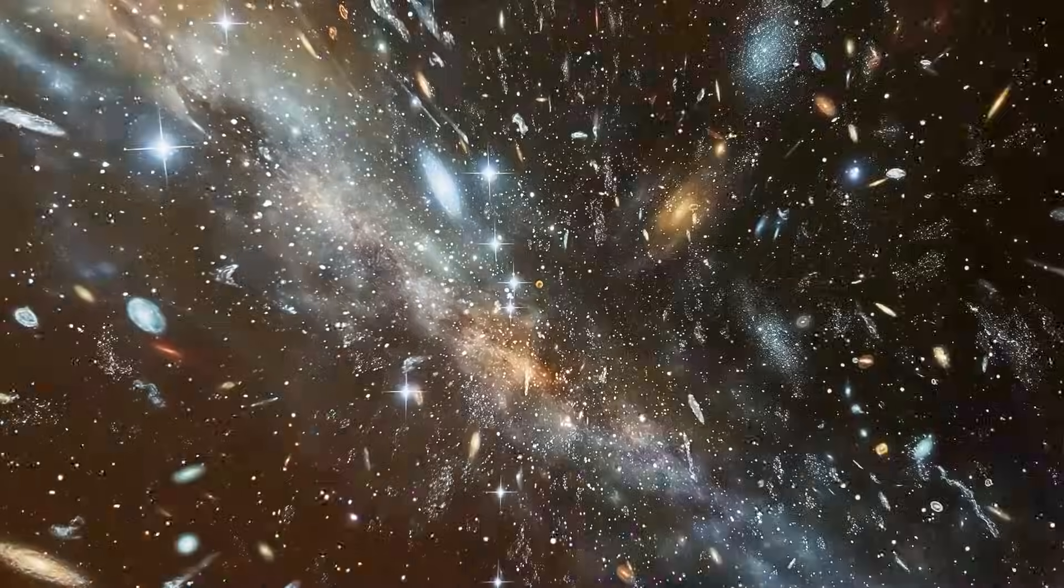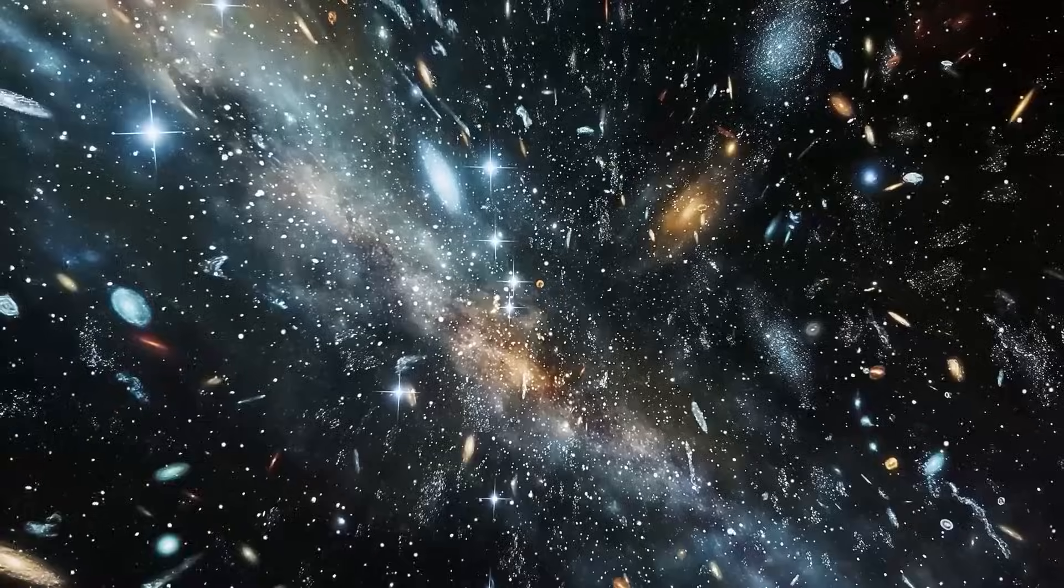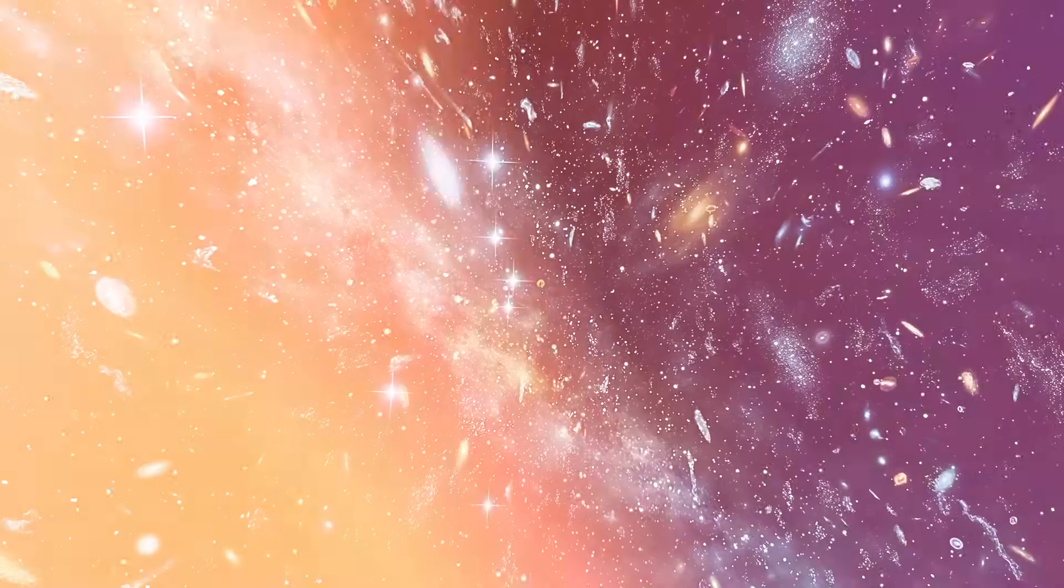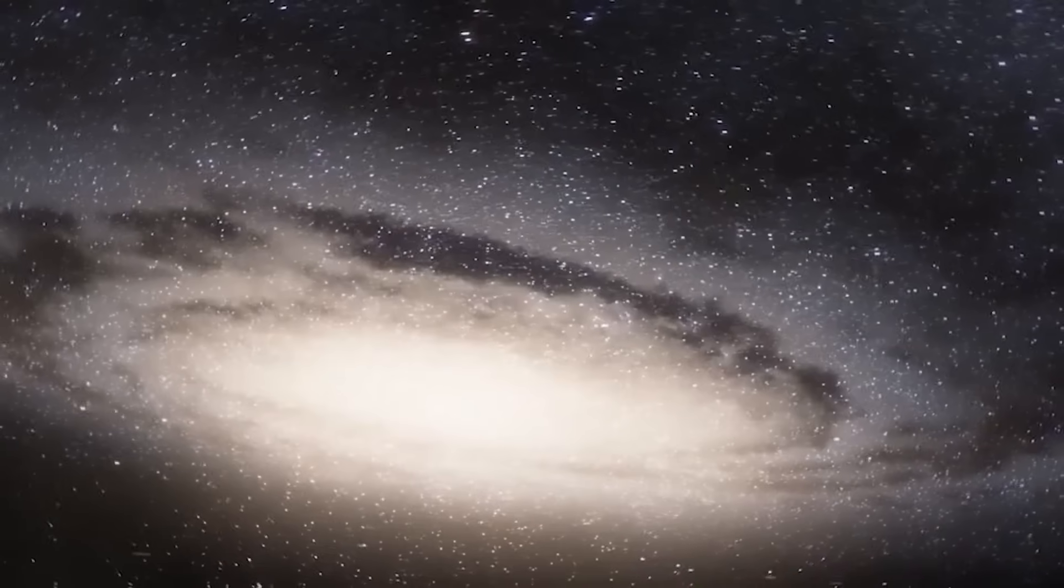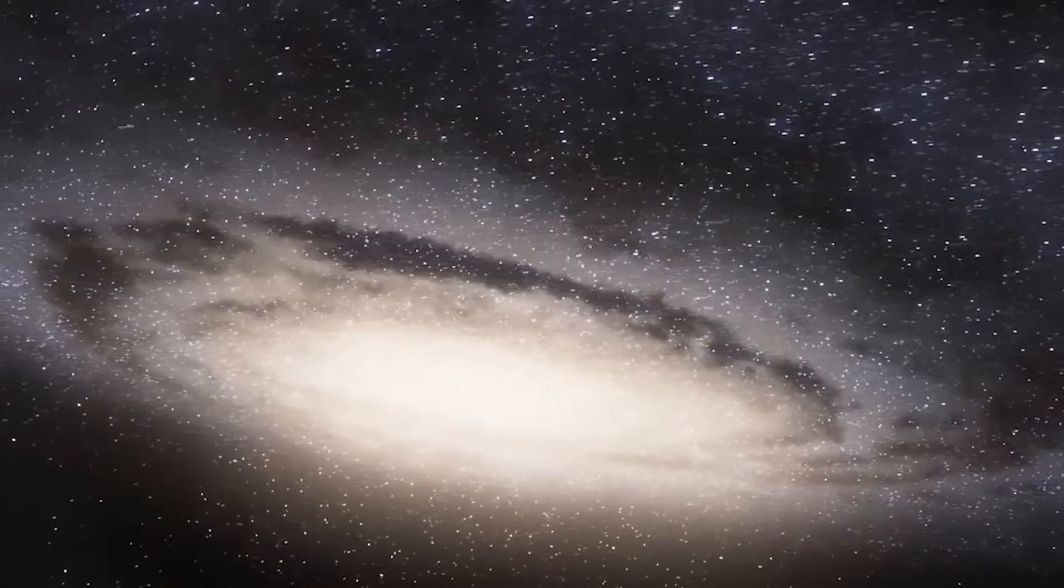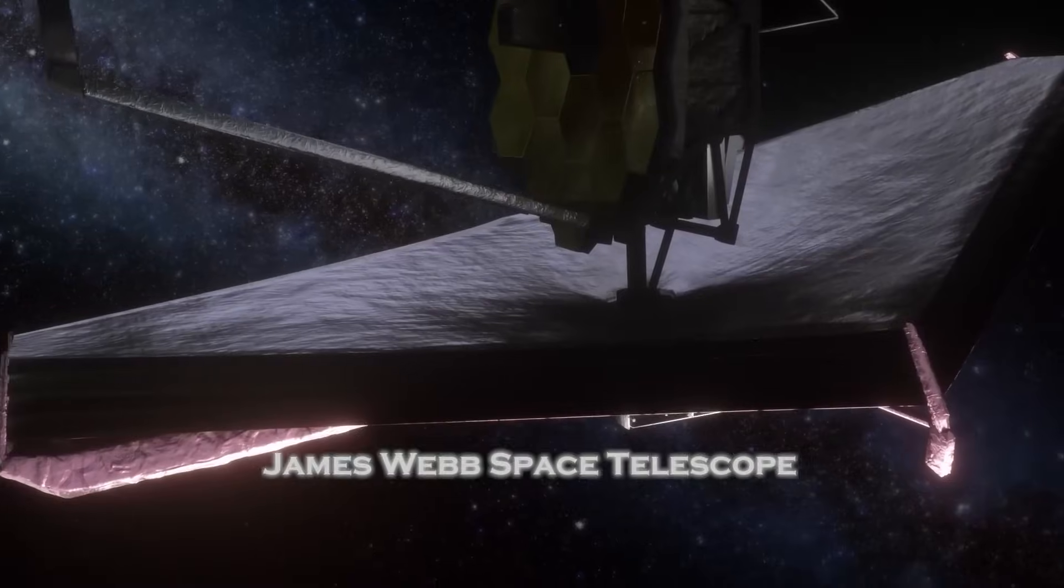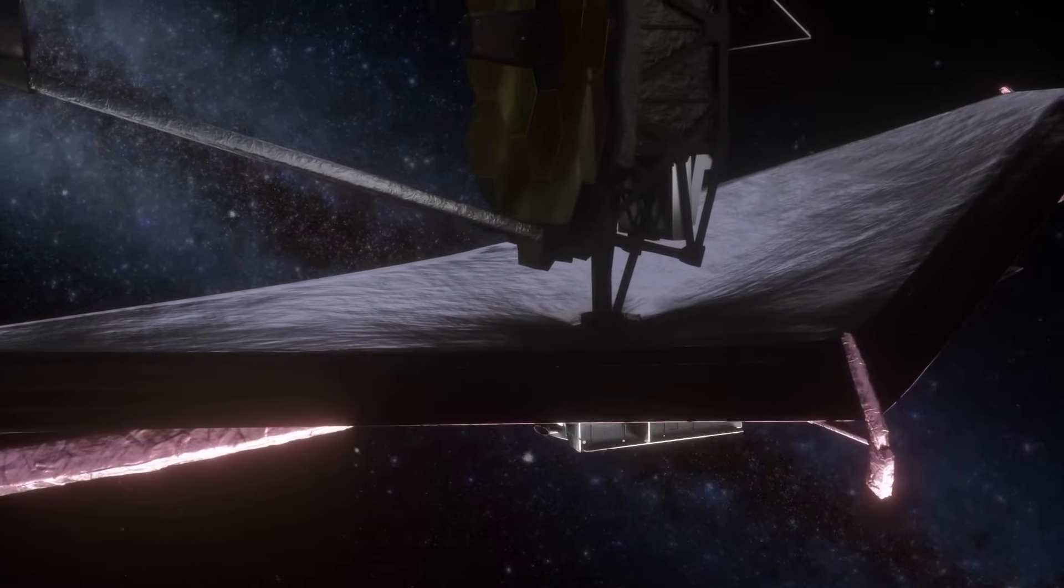Taken together, these discoveries begin to erode the traditional concept of the habitable zone. For decades, habitability was defined narrowly, a thin ring around a star where liquid water could exist on a planet's surface. Webb is showing us that this framework is far too limited.